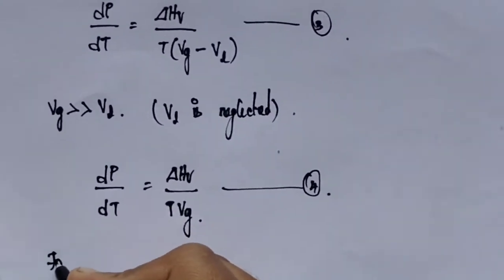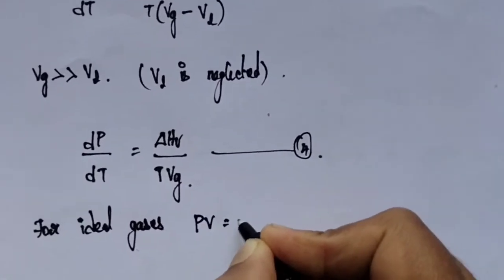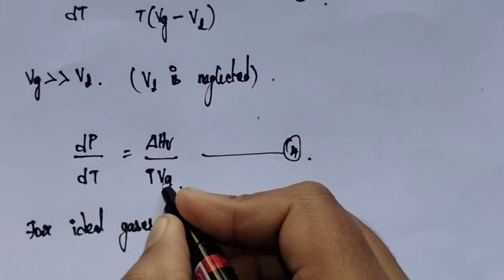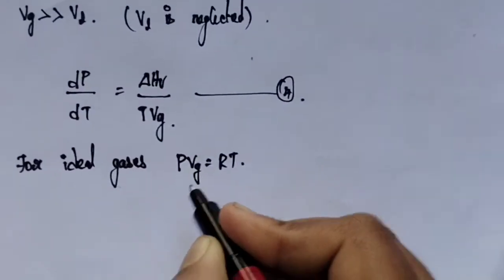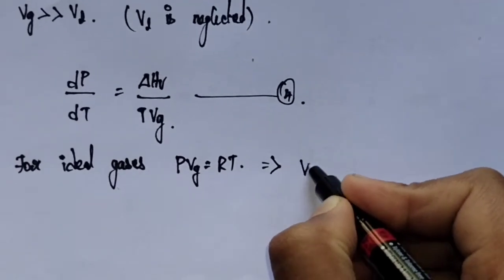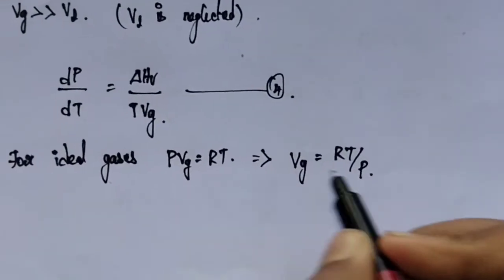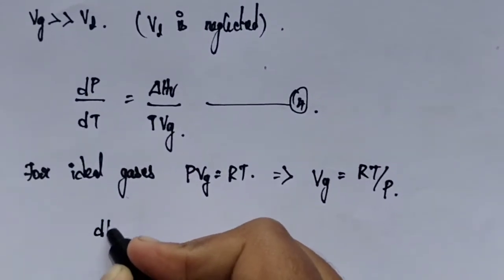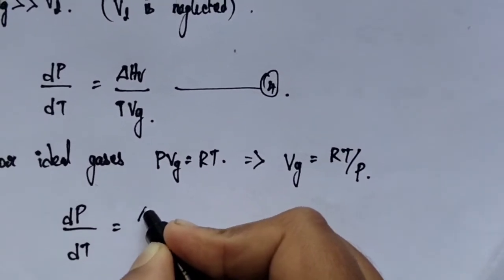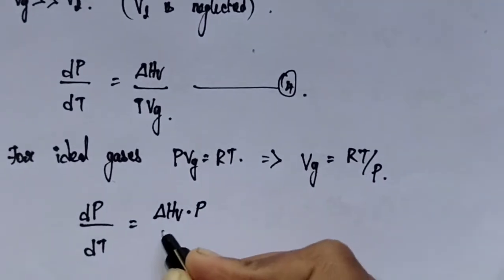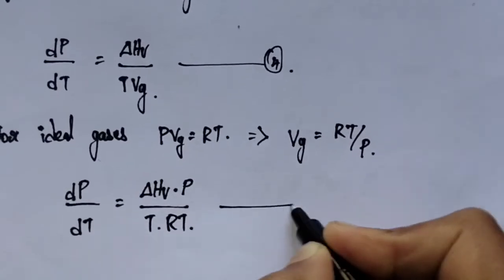We know that for ideal gases, PV is equal to RT, where V is the volume of the gas phase. So PVg equals RT, giving us Vg equal to RT/P. Substituting this in equation 4, we get dP/dT is equal to ΔHv·P upon T·RT. Take this as equation number 5.